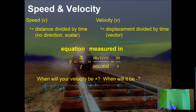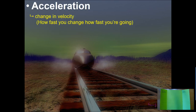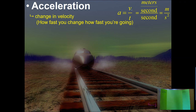We have one more slide to talk about, and that is acceleration. If speed and velocity are a change in position per time, then acceleration is a change in velocity per time. It's changing your velocity — how fast you change how fast you're going. We take our velocity divided by time. Velocity is measured in meters per second, so dividing by seconds gives us meters per second squared.